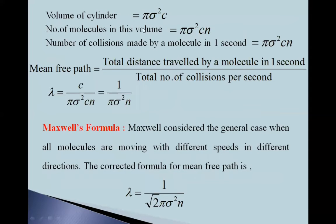So volume of the cylinder is π sigma squared c. Number of molecules in this volume is π sigma squared cn. So number of collisions made by one molecule in one second is π sigma squared cn.